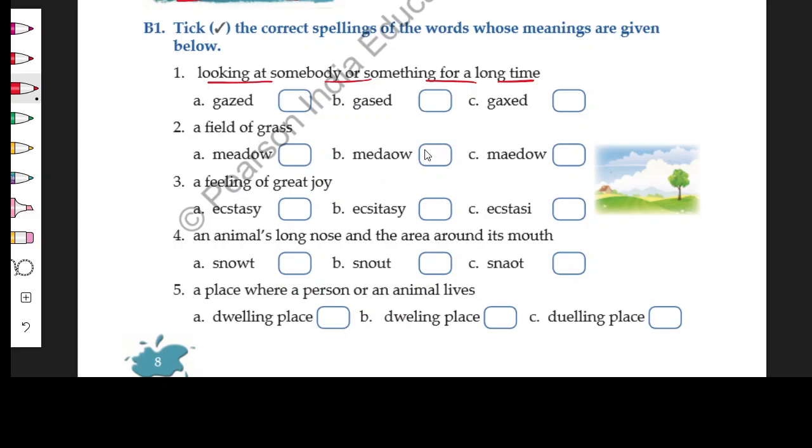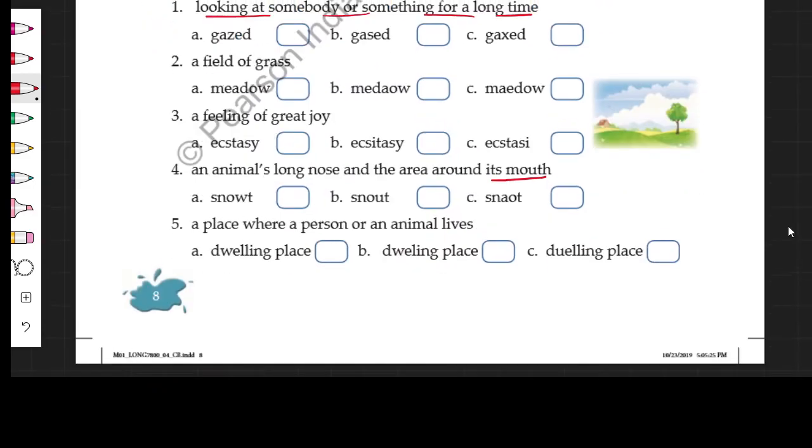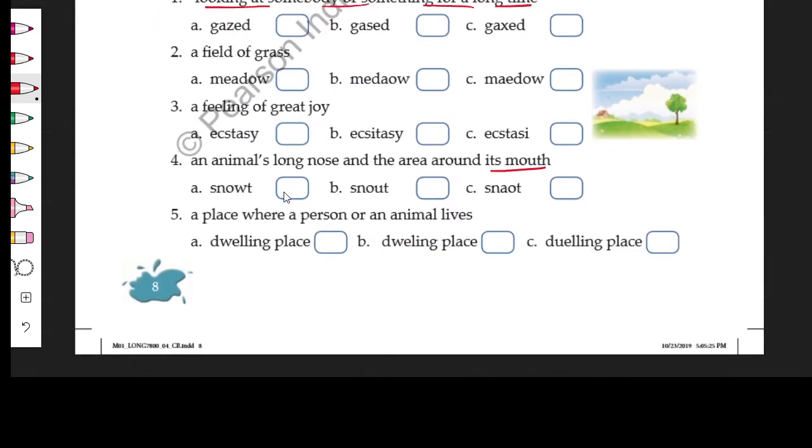When you want to use it as a skill, you say he was ecstatic or a great sense of ecstasy came over him. An animal's long nose and the area around its mouth, well this is called snout. A place where a person or an animal lives, that is called the dwelling place.